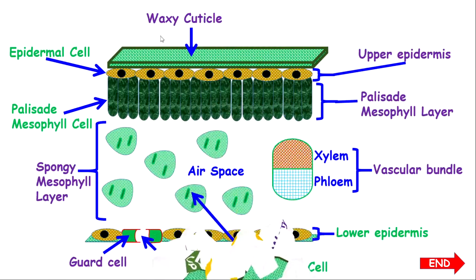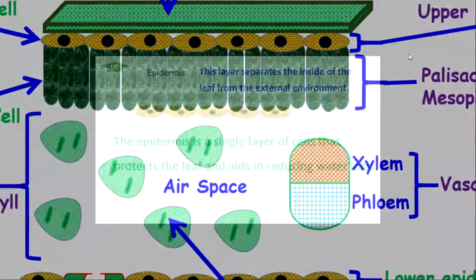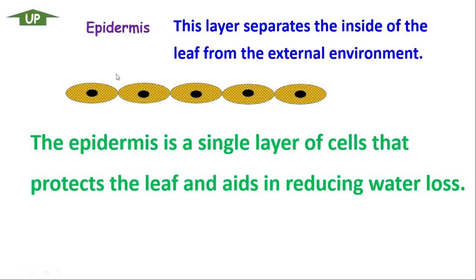Let's look at the upper epidermis. The upper and the lower epidermis pretty much have the same function. The upper epidermis is thicker than the lower epidermis because it is exposed to direct sunlight — therefore it must be thicker to provide greater protection. The epidermis is the layer that separates the inside of the leaf from the external environment. It provides protection and also aids in the reduction of water loss, assisting the waxy cuticle.